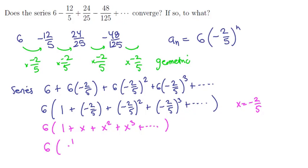We know the geometric series sums to 1 over 1 minus x, and that convergence holds as long as x is between minus 1 and 1 — within the radius of convergence.